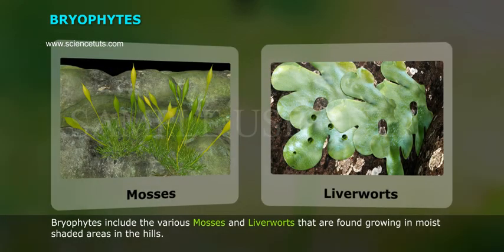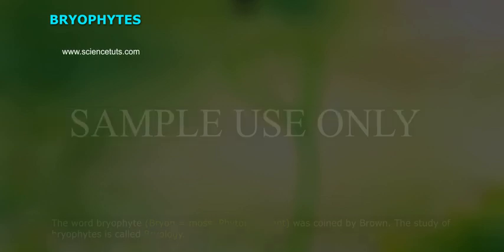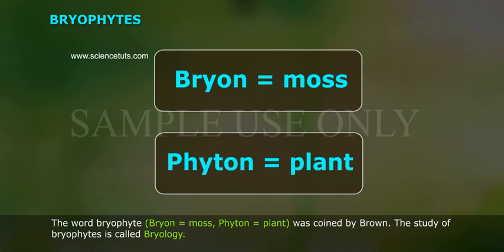Bryophytes include the various mosses and liverworts that are found growing in moist shaded areas in the hills. Bryophytes are a small group of primitive plants which are commonly called amphibians of the plant kingdom. The word bryophyte — bryon means moss, phyton means plant. Coined by Brown, the study of bryophytes is called bryology.